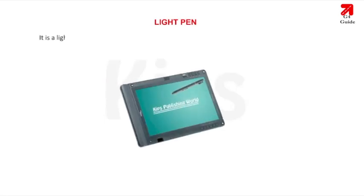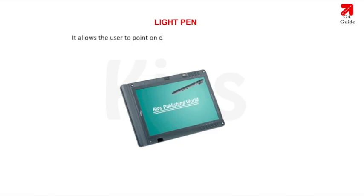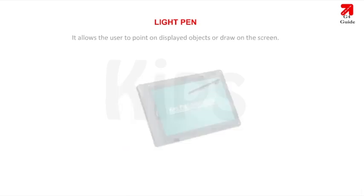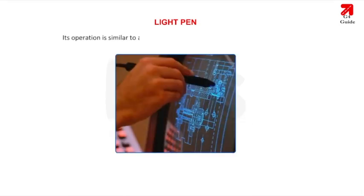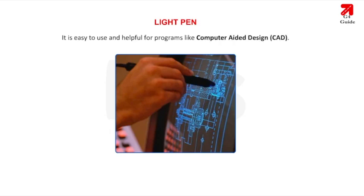Light Pen is a light-sensitive pointing device commonly used to select or modify data on the screen. It allows the user to point on displayed objects or draw on the screen. Its operation is similar to a touch screen but has greater positional accuracy. It is easy to use and helpful for programs like computer-aided design (CAD).